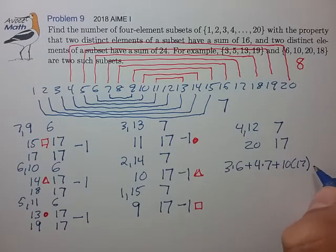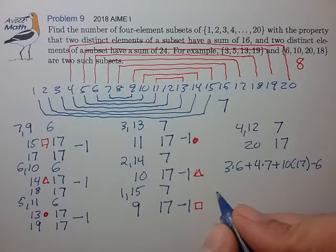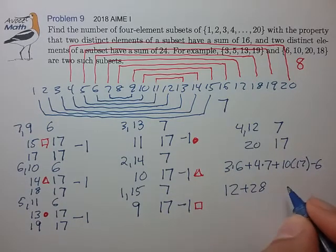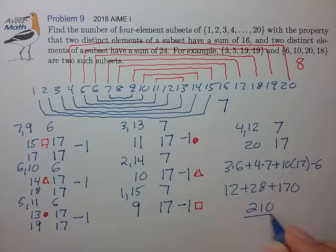So that's minus 6, excuse me, for all the minus 1's that we have. So that's 3 times 6 minus 6, that's 2 times 6, 12, 4 times 7, 28, 10 times 17, 170, total 210.